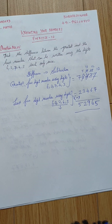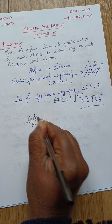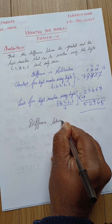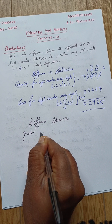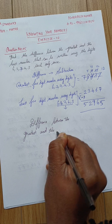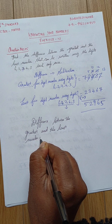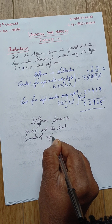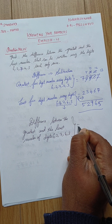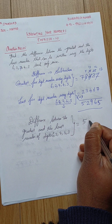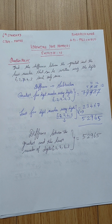So the difference between the greatest and the least number formed using digits 6, 2, 7, 4, 3 is 52965. That's it.